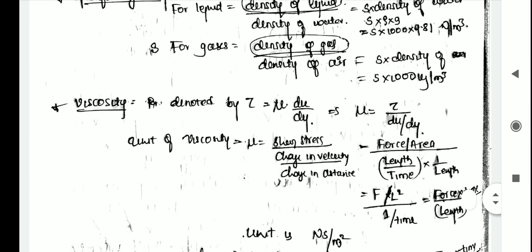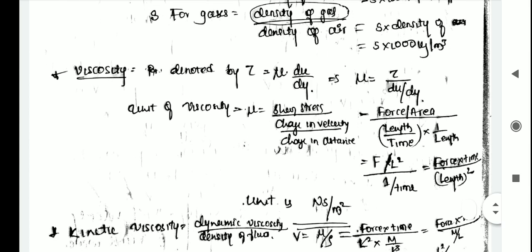Next is viscosity. It is a property of the fluid which offers resistance to the movement of one layer of fluid over another adjacent layer. It is denoted by mu. The relation is tau equals mu into du by dy, so mu equals tau divided by (du/dy). Here tau is shear stress, du is change of velocity, and dy is change of distance. Shear stress is force divided by area, and working through the units — force over length squared over (length over time), length cancels — giving unit of viscosity as Newton-second per meter square.